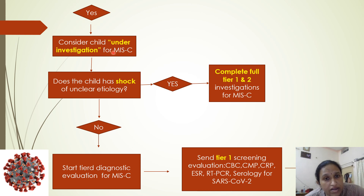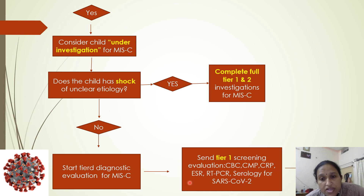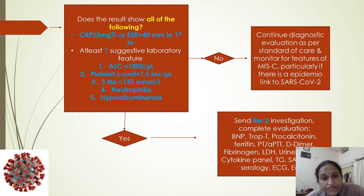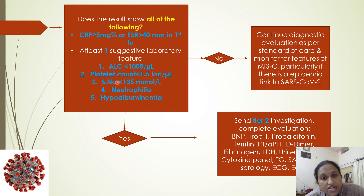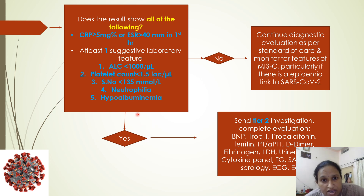Tier 1 screening evaluation includes CBC, complete metabolic panel, CRP, ESR, RT-PCR, and serology for SARS-CoV-2. If results show increased CRP, ESR more than 40, and at least one suggestive laboratory feature — absolute lymphocyte count less than 1000 per microliter, platelet count less than 1.5 lakhs per microliter, serum sodium less than 135 millimoles per liter, neutrophilia, or hypoalbuminemia — then Tier 2 investigations are sent.